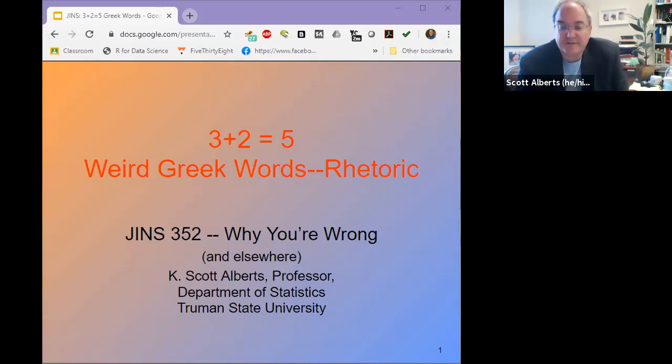The class I originally scripted this talk for, GEMS 352, is a junior level interdisciplinary writing course called Why You're Wrong, focused on how and why people change their minds or not in the face of new evidence and data. I use it in other classes as well because we scientists are always looking for ways to convince people of things.